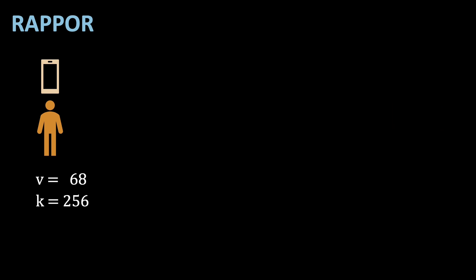We need five parameters for the algorithm: K and H, which I've already covered, F, P and Q, which are just parameters for probabilities. Let's start with the algorithm.